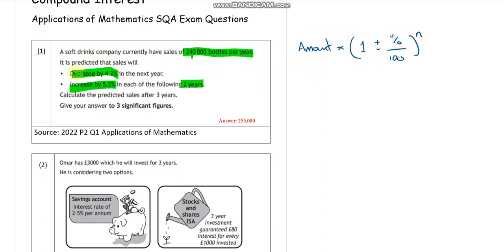So I want to take my amount, I've got 240,000. The first thing I'm going to do is decrease that by 4.2%. I'll say okay, I'm going to times that by 1 take away 4.2 over 100, and that's just for one year. And now we're going to increase by 5.3 for the next two. So the increase by 5.3 is 1 plus 5.3 over 100 to the power of 2. I like this question because it's sort of trickier. A lot of the time it can just be one sum, but this one's made you do this sum twice.